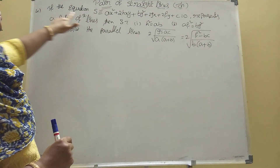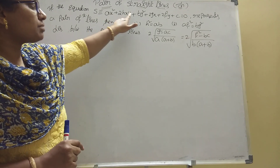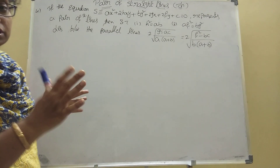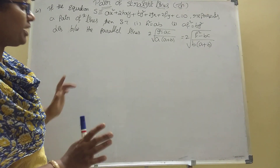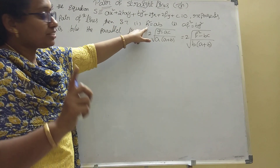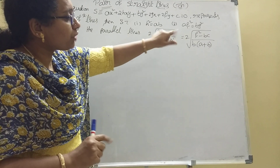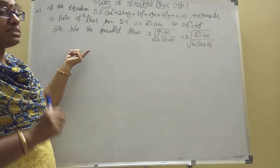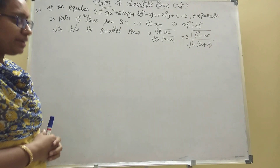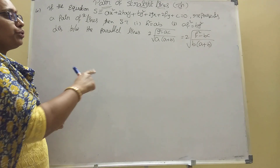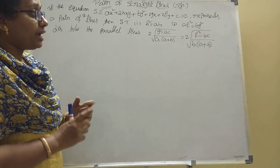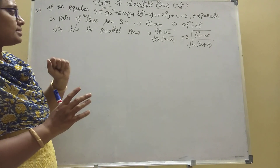Now, pair of straight lines theorem. The equation S is equal to ax² + 2hxy + by² + 2gx + 2fy + c = 0. This is the full form of the pair of straight lines equation. It represents the pair of straight lines and we have to prove three parts: first h² = ab, second af² = bg², and third is the distance between parallel lines, which is 2√(g²−ac) / a(a+b), also equal to 2√(f²−bc) / b(a+b).